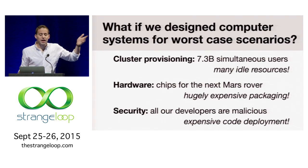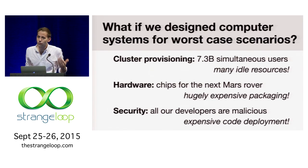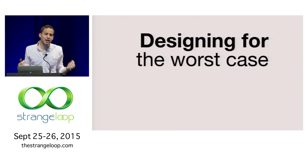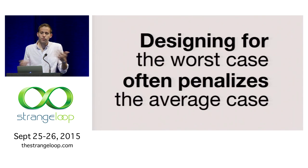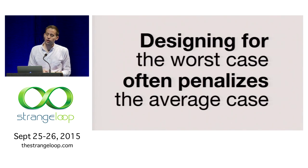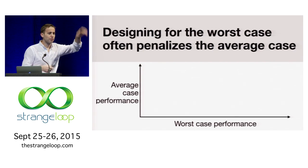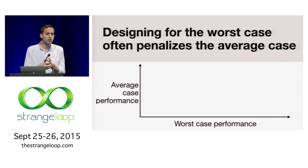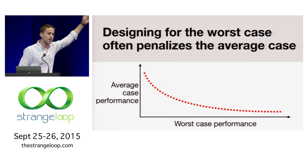Not surprisingly, by designing our computer systems for worst case scenarios, we find that designing for the absolute worst case frequently ends up penalizing the average case. We end up making trade-offs that essentially hamper our performance when bad things don't actually occur. In terms of this trade-off, we might visualize it as a graph: if on the y-axis we have our performance in the average case, the more and more corner cases that we handle, the more and more we start to penalize ourselves.